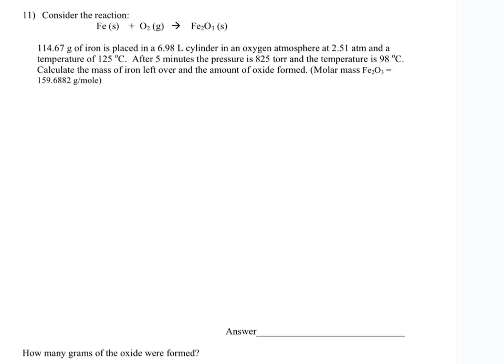Alright, so we have iron reacting with oxygen gas, and by the way, oxygen is the only gas, producing a solid ferric oxide. We have a certain amount of iron placed in a 6.98 liter container in an oxygen atmosphere at 2.51 atmospheres pressure and a temperature of 125 degrees Celsius. After five minutes, the pressure is 825 torr and the temperature is 98 degrees Celsius.